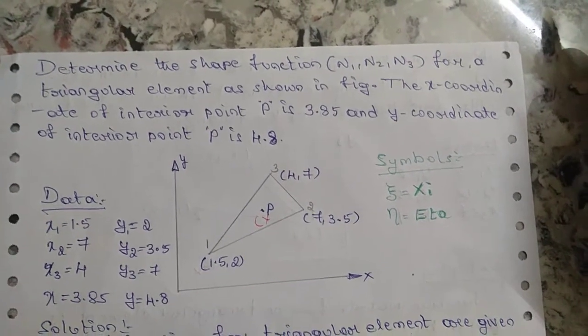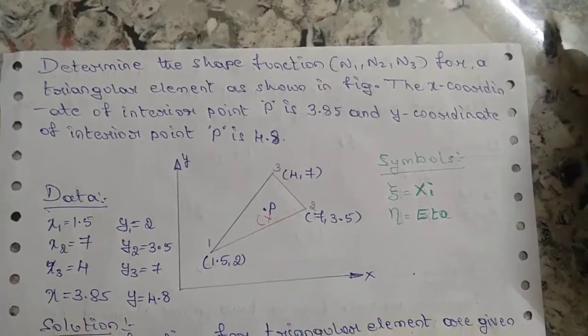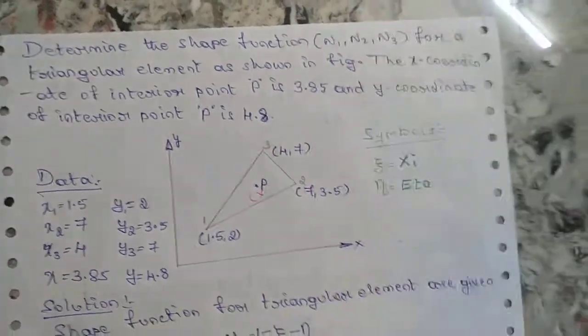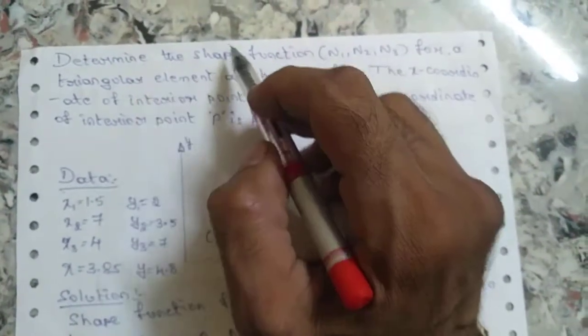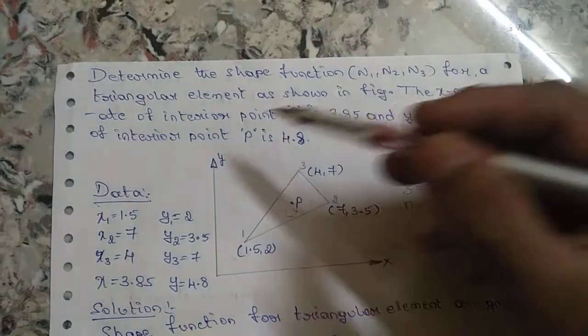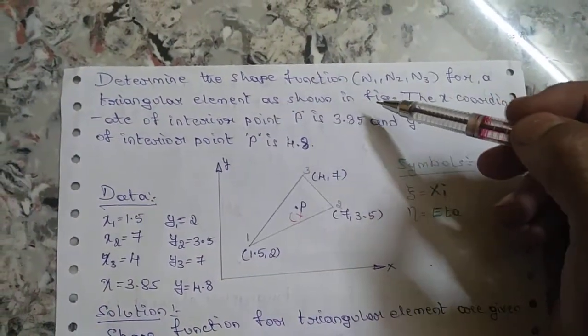Let us solve one more problem from finite element method or finite element analysis. The problem statement is: determine the shape function N1, N2, N3 for a triangular element as shown in the figure below.